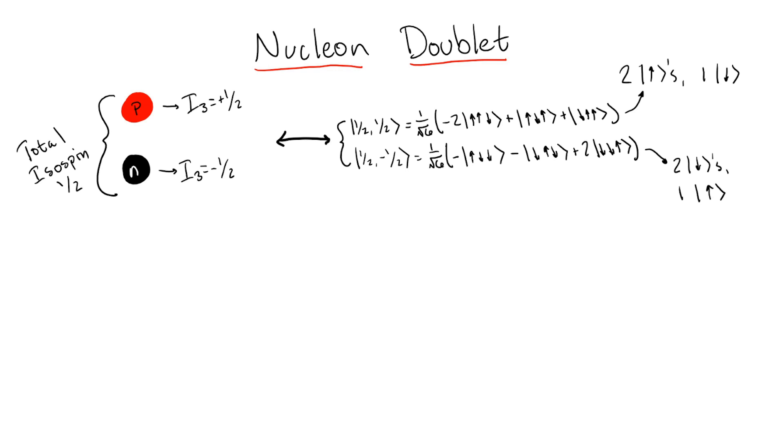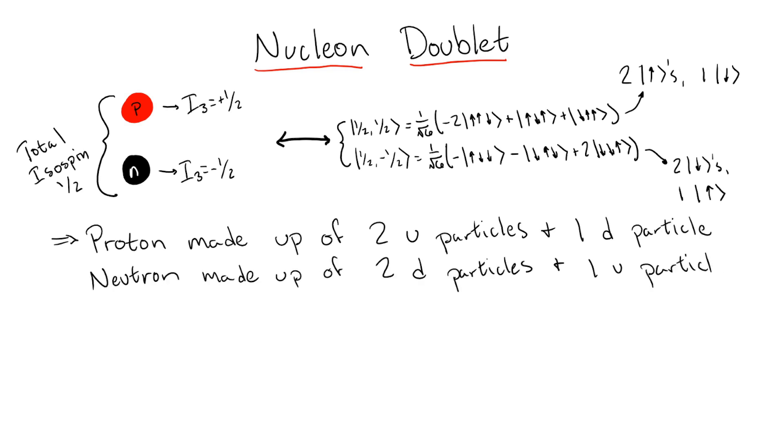Directly applying this to the case of isospin, we can see that we can consider the proton as a combination of two up isospin particles and one down isospin particle, while the neutron is made up of one up isospin particle and two down isospin particles.